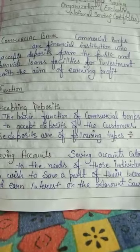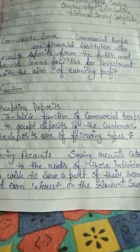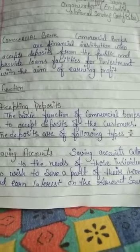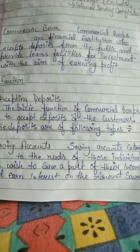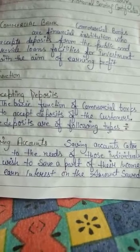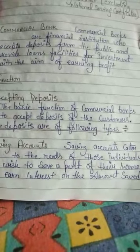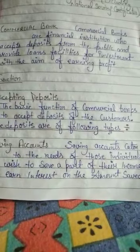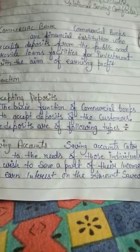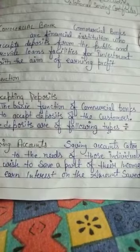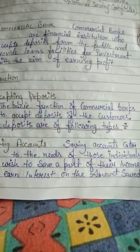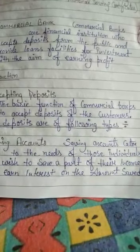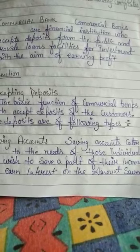Different types of accounts hote hain: saving account, current account, RD account, aur bahut accounts hote hain. Saving account matlab ki individuals apni income ka kuch part save karte hain — kuch rate of interest milta hai aur future secure karne ke liye paise daltein hain saving account mein.